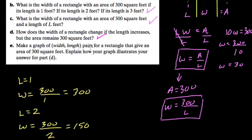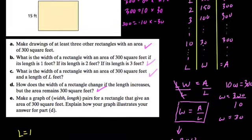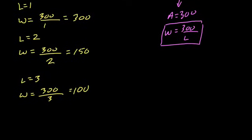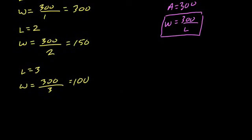Make a graph of width and length pairs for a rectangle that give us an area of 300 feet. Explain how your graph illustrates the answer for part D. So that shows how the width decreases as the length increases. Okay, so we have this table up here we can use. We can generate a different table. Really any table here, we're making a graph.